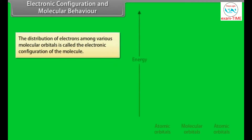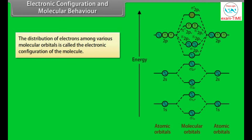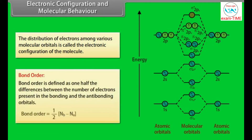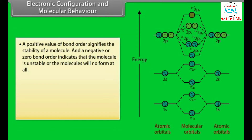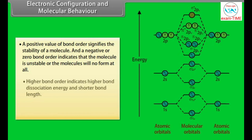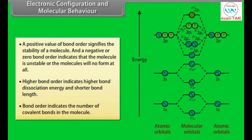The distribution of electrons among various molecular orbitals is called the electronic configuration of the molecule. Bond order is defined as one-half the difference between the number of electrons in bonding orbitals and anti-bonding orbitals. A positive bond order signifies stability, while a negative or zero bond order indicates that the molecule is unstable or will not form. Higher bond order indicates higher bond dissociation energy, shorter bond length, and a greater number of covalent bonds.